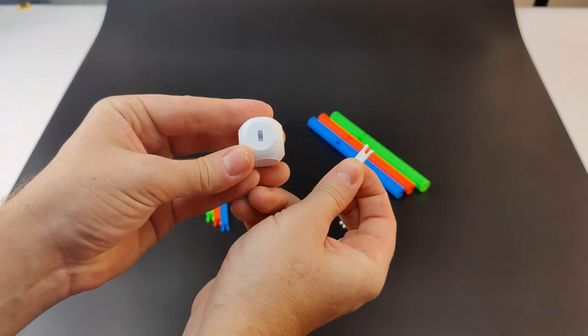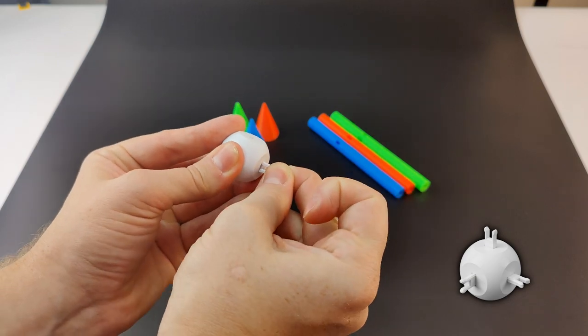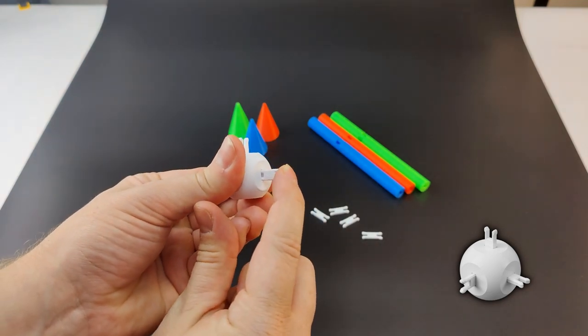We'll start by taking three clips and putting them into the three holes on the center ball. It can be helpful to roll the clips in a little bit like that.